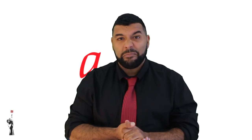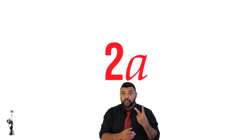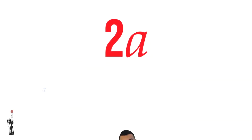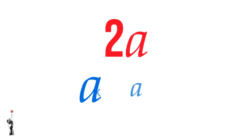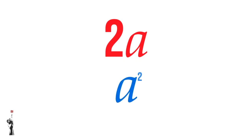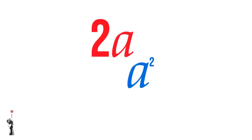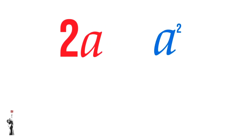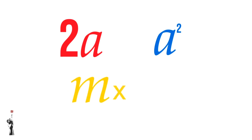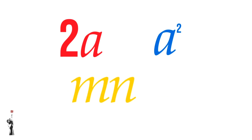Some simple rules apply, such as A plus A gives us 2A, whereas A multiplied by A gives us A squared. If we have two different variables and we multiply them, like M and N, then M multiplied by N will be MN.